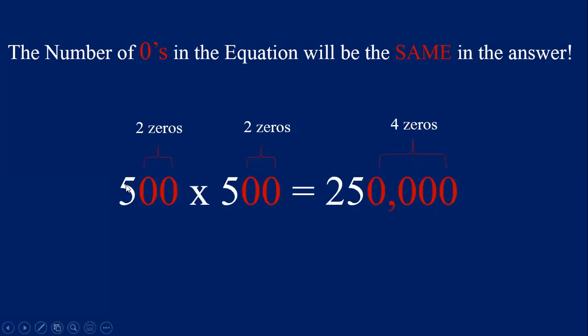Let's try 500 times 500. Do you know what 5 times 5 is? 5 times 5 equals 25. Count your zeros: 1, 2, 3, 4 zeros are in the equation. Write four zeros in the answer. Count over three place values, put that comma in, and we read this number as 250,000. 500 times 500 equals 250,000. Isn't that fun? The number of zeros in the equation is the same as the number of zeros in the answer.